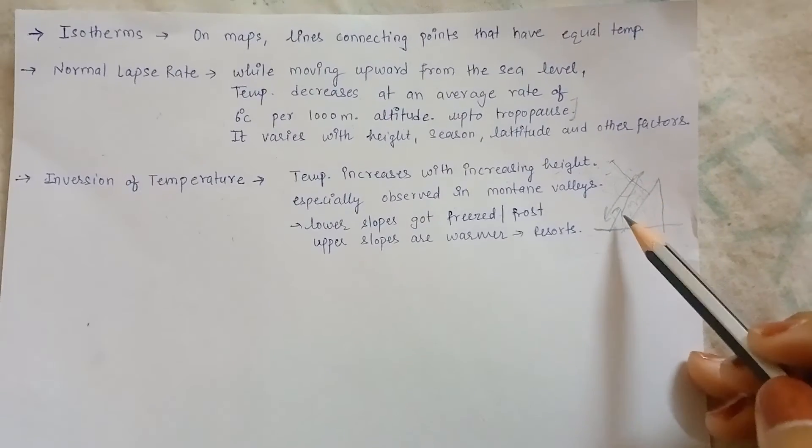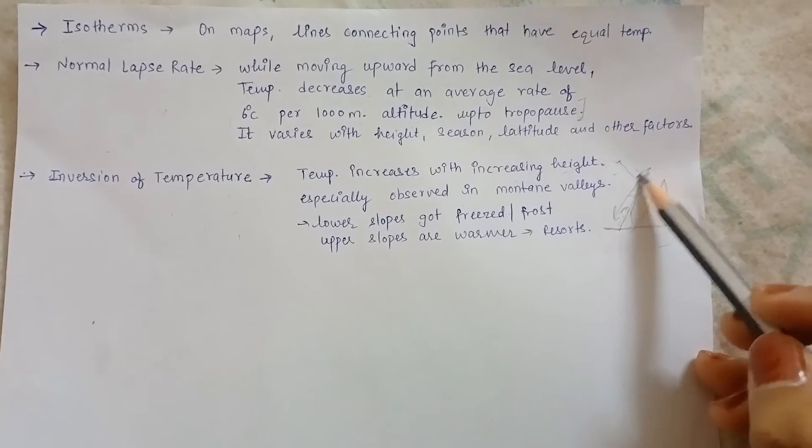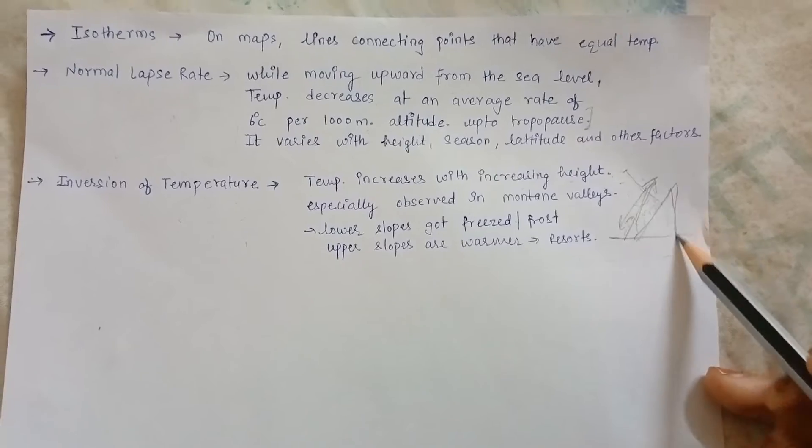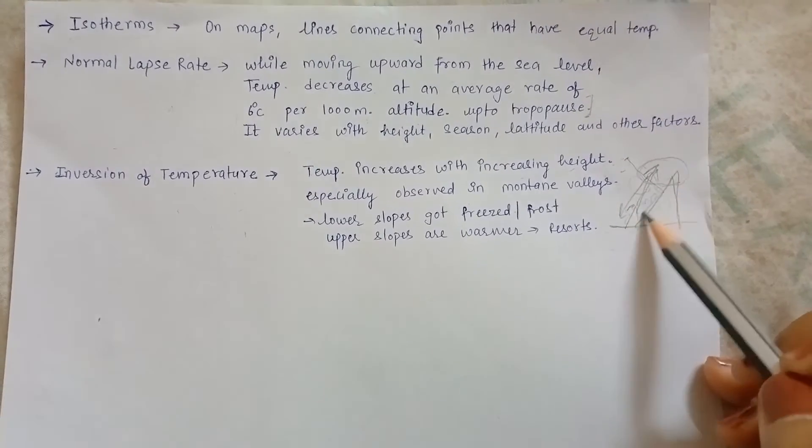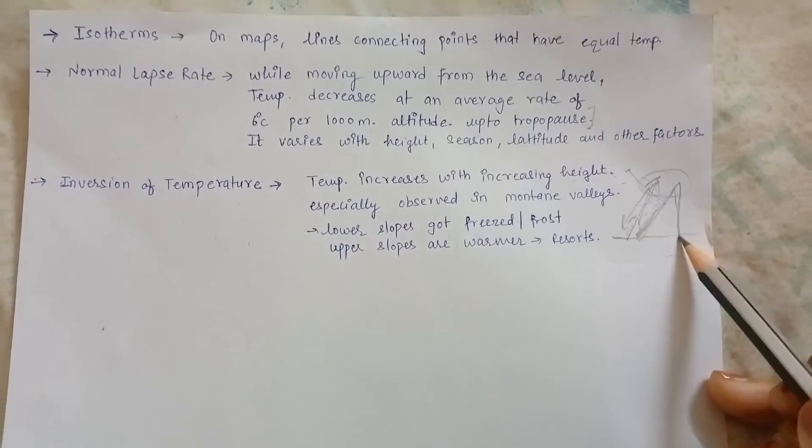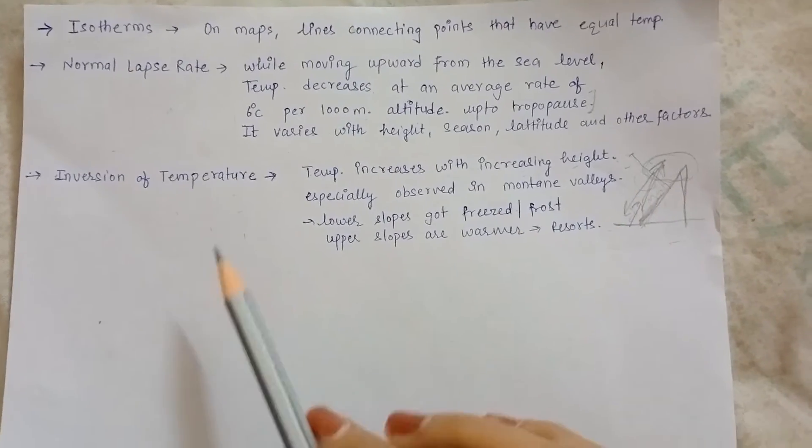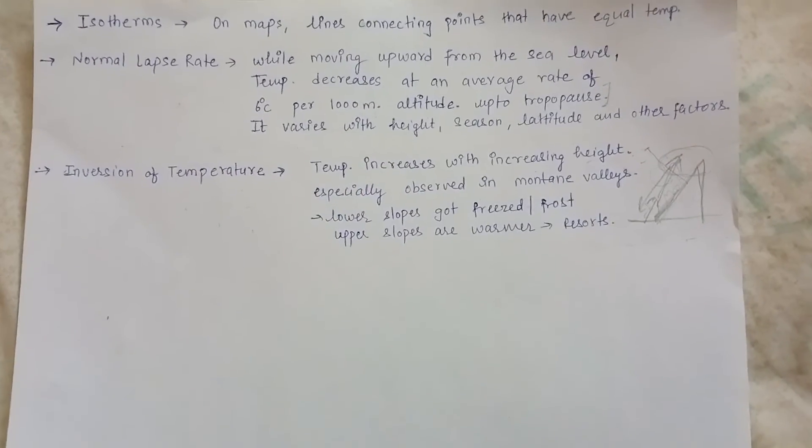So this way, the atmosphere or the high-altitude area is warmer compared to the lower slopes of the mountains. This is the inversion of temperature.